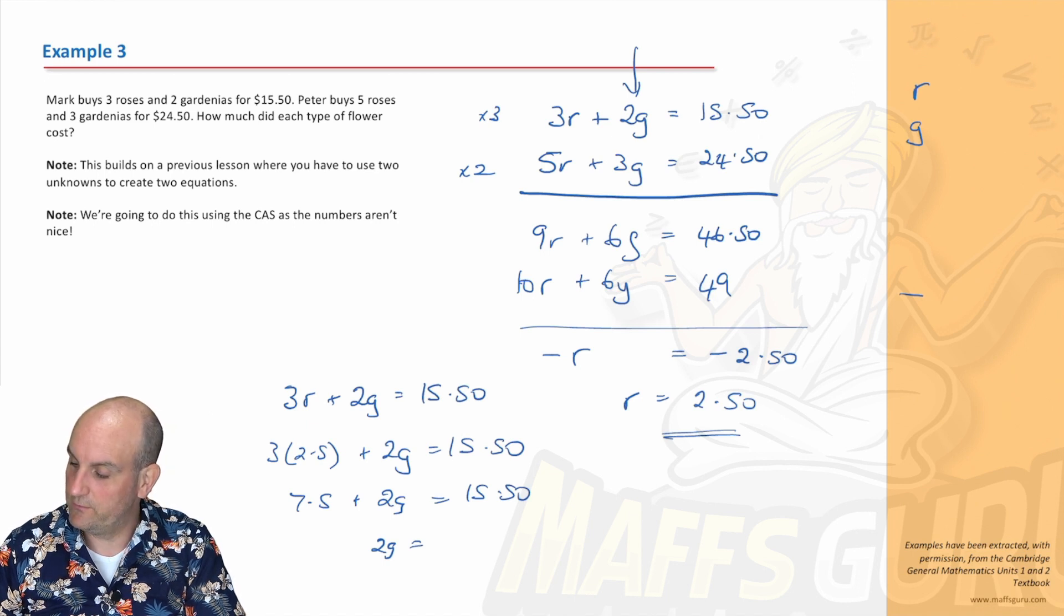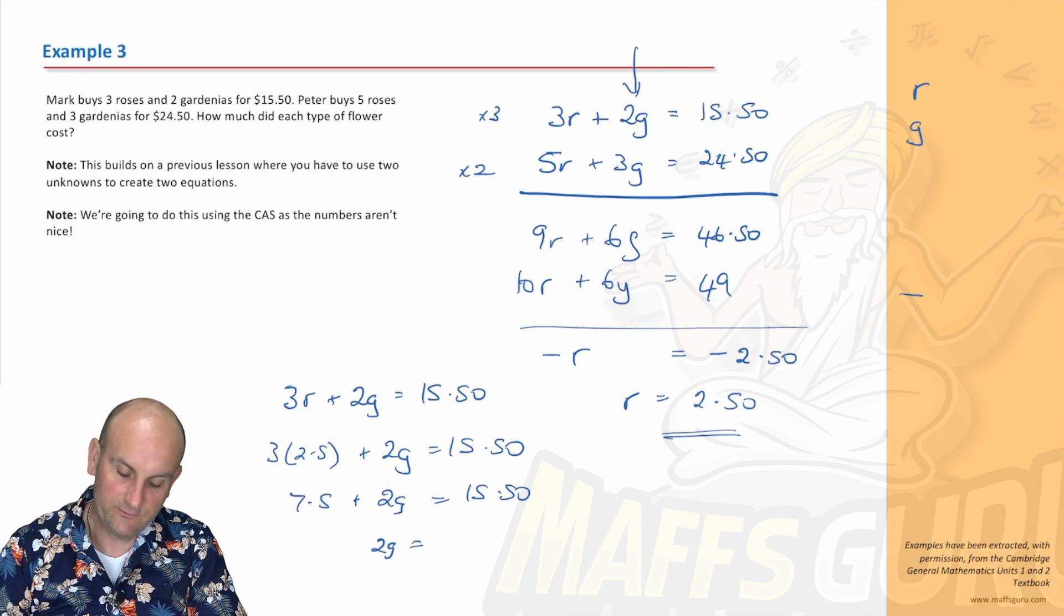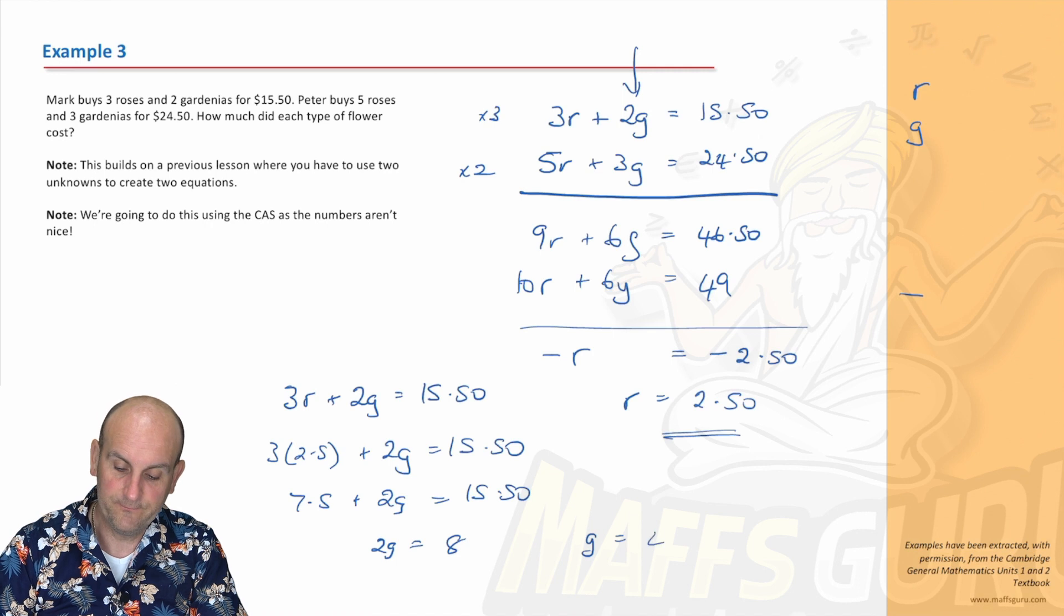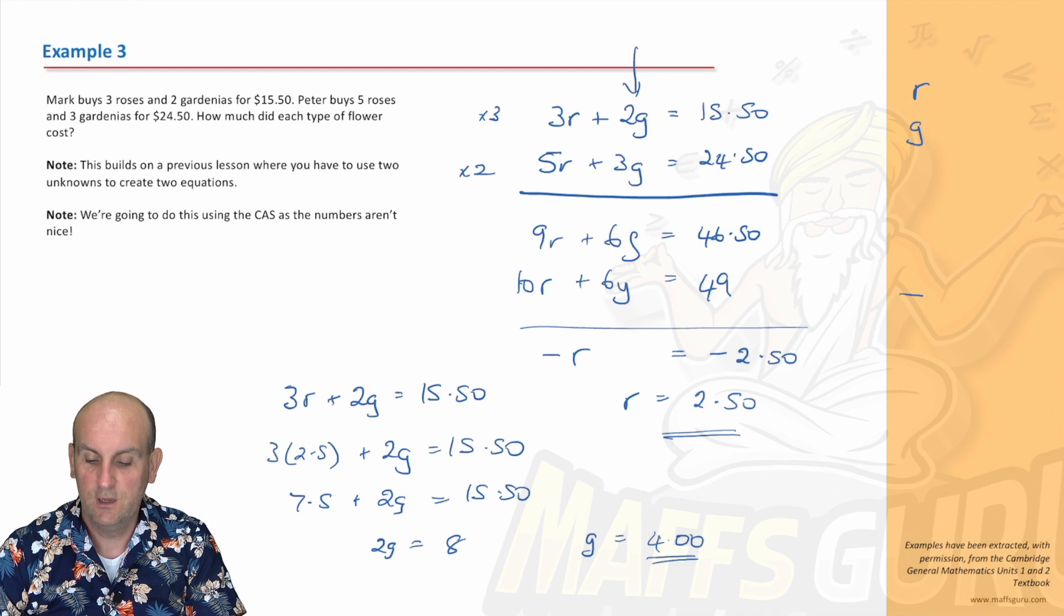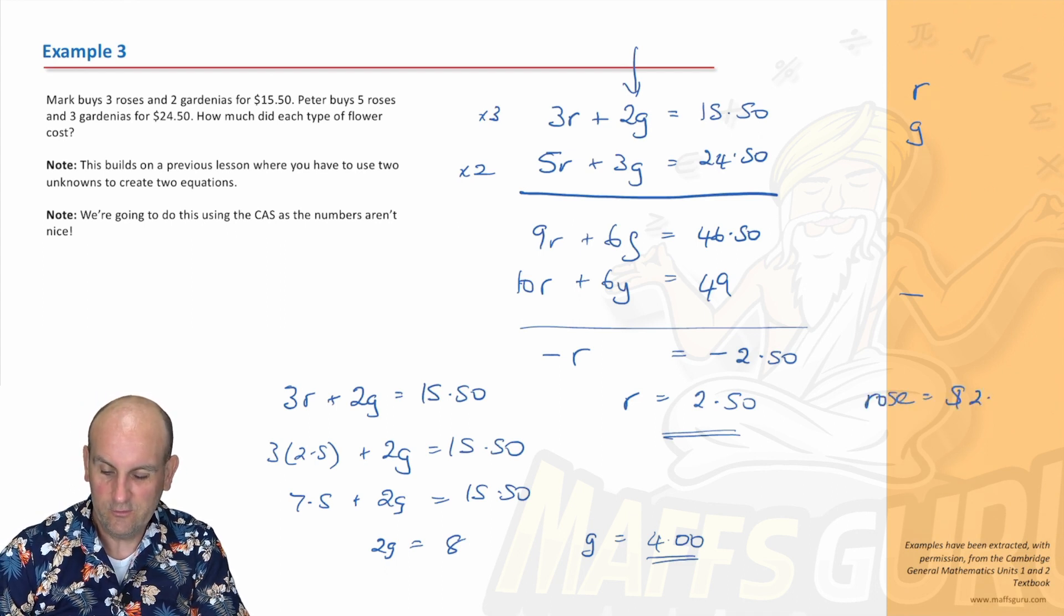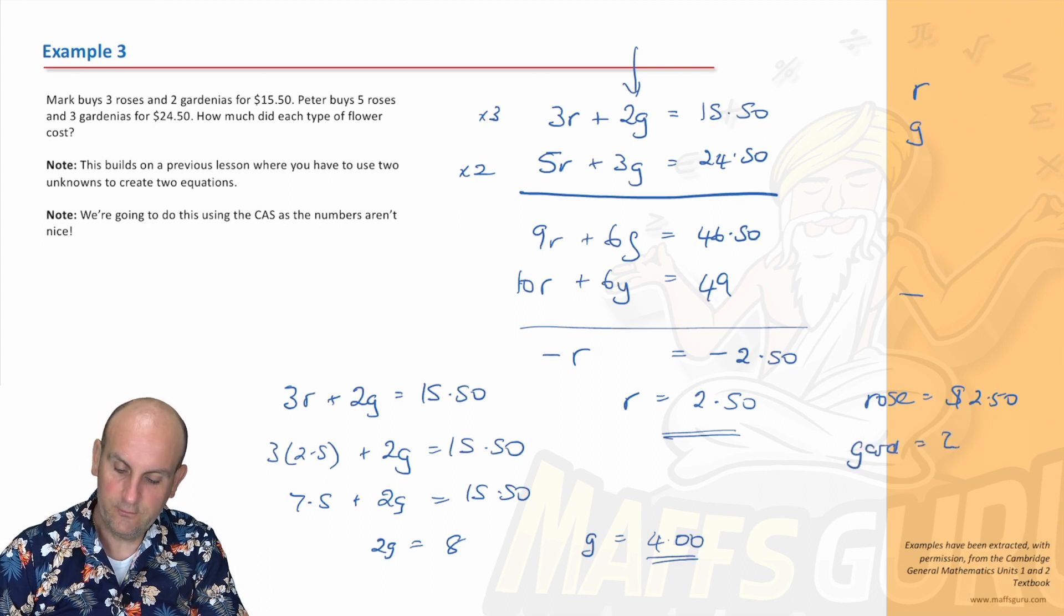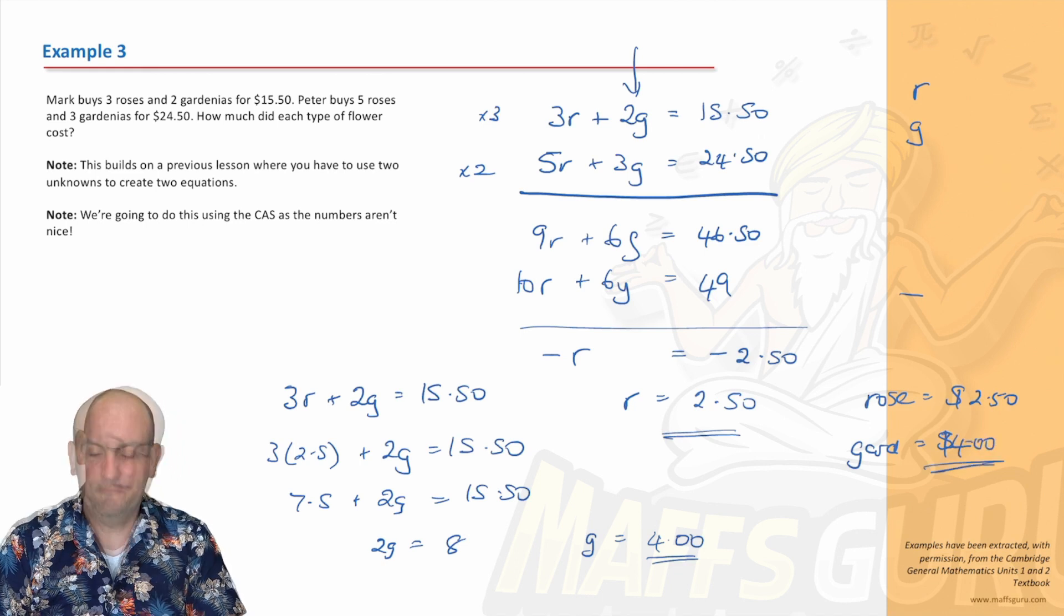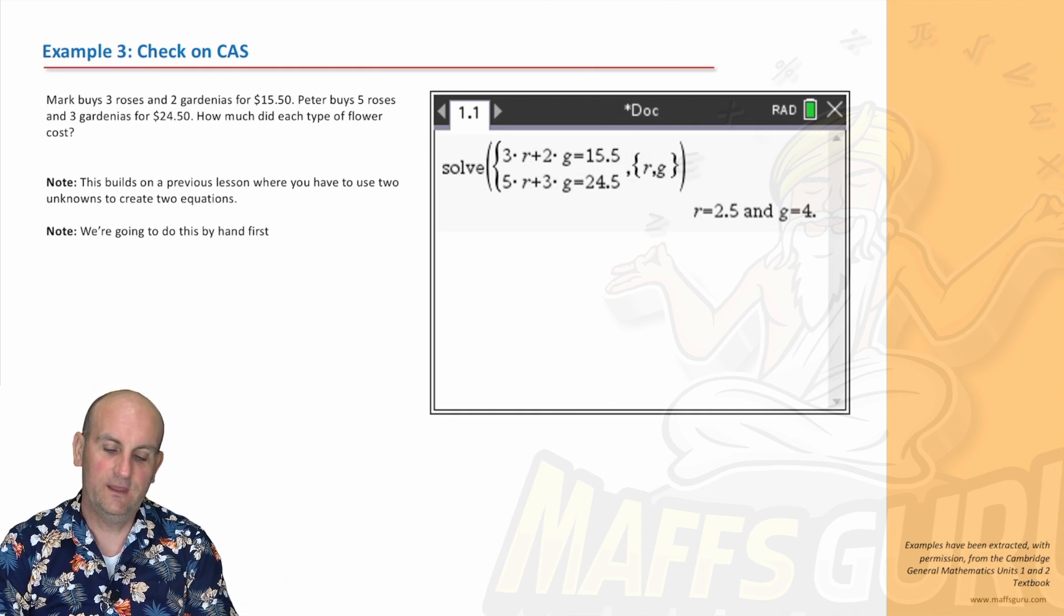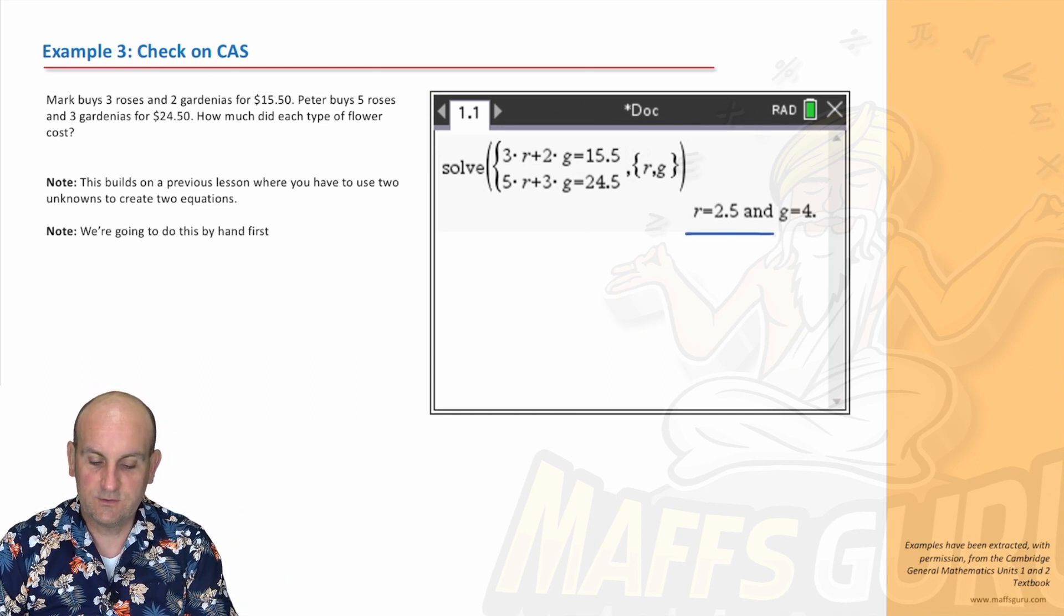So we now know the gardenia is $4. Because it wants to know the cost, you would therefore say a rose equals $2.50 and the gardenia equals $4. Now obviously we can check this one on the CAS. There we go. What do we notice? The rose was $2.50 and the gardenia was $4.